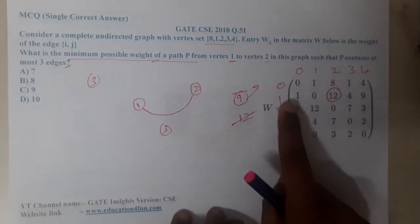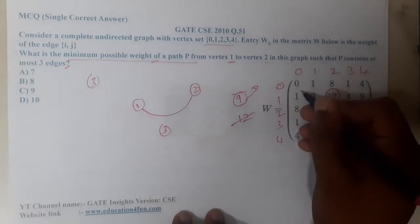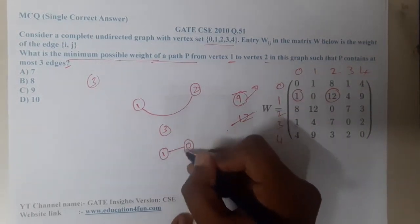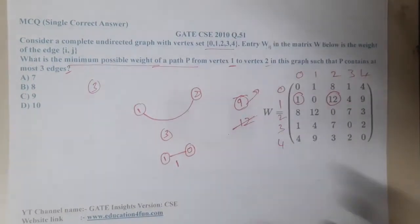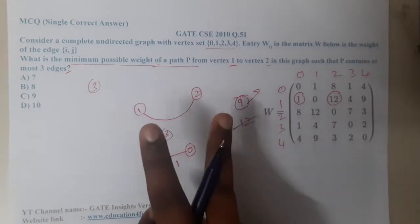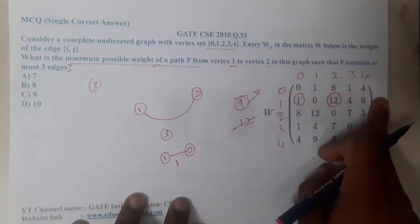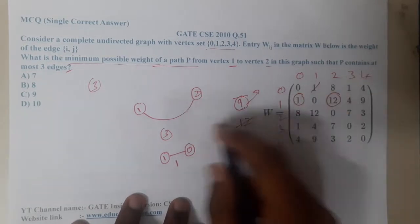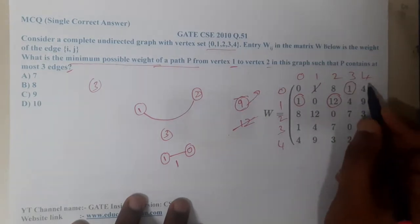Let us start searching. From 1, where can you go with a really cheap cost? From 1 you can go to 0 with a cost of 1. From 0 you need to go somewhere, and at the end you should reach 2. Let us search in row 1, which is the cheapest cost.